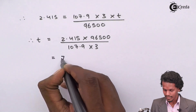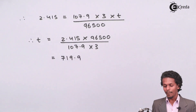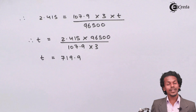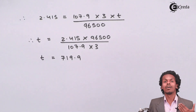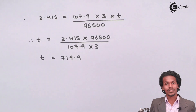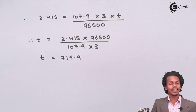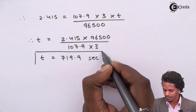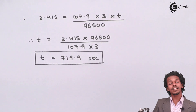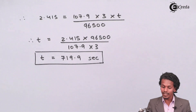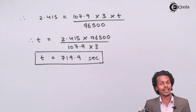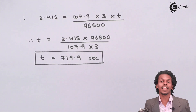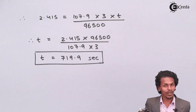We get a value of 719.9, and this is in seconds because all units used are in grams and CGS units. Therefore the time is 719.9 seconds. This is the first answer: it requires 719.9 seconds to deposit 2.415 grams of silver when 3 amperes of current is passed through the electrolytic cell.